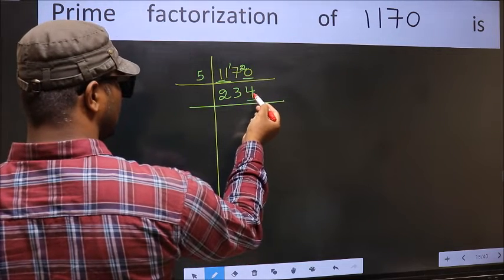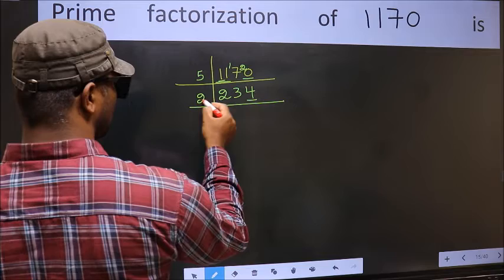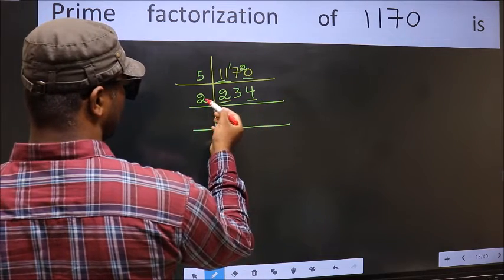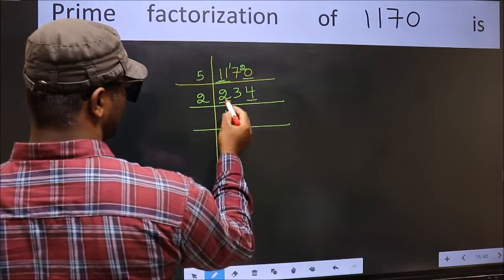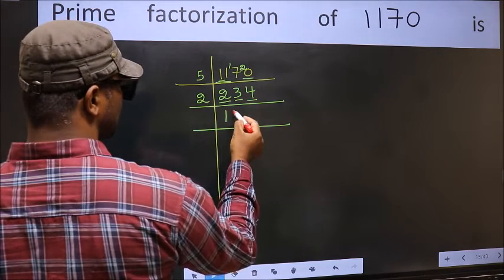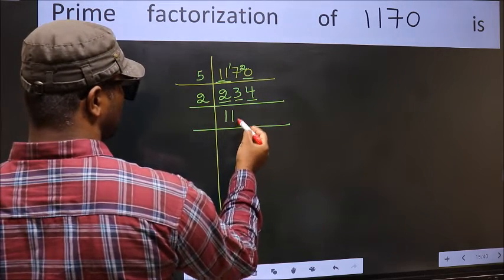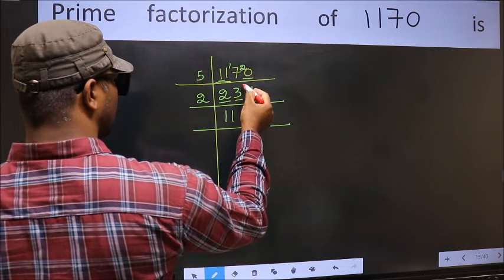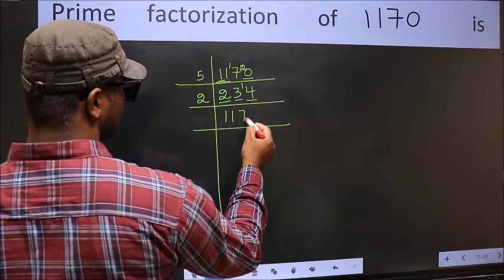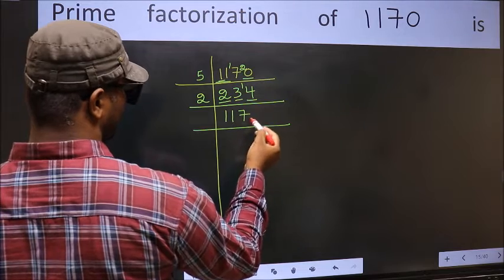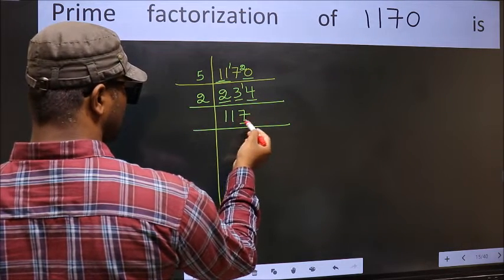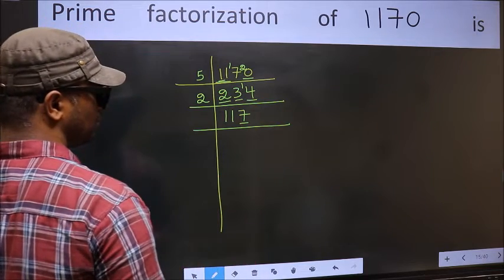Now here the last digit is 4, so take 2. First number is 2. When do we get 2 in the 2 table? 2 times 1 is 2. The other number is 3. A number close to 3 in the 2 table is 2 times 1 is 2. 3 minus 2 is 1, carry forward to get 14. We get 14 in the 2 table at 2 times 7. Now here the last digit is 7, not even, so this is not divisible by 2.